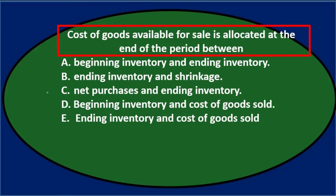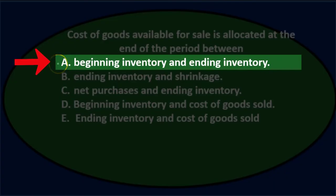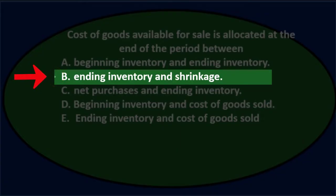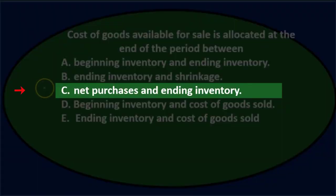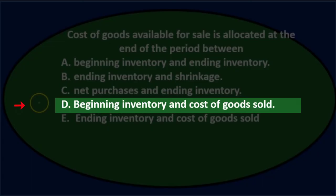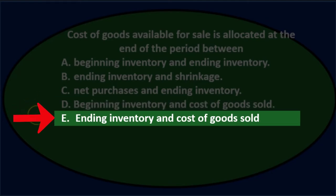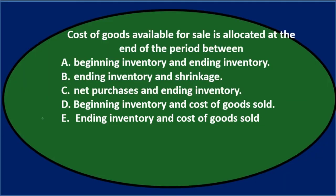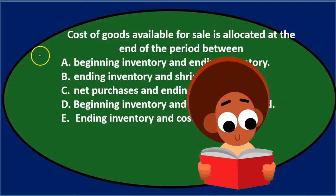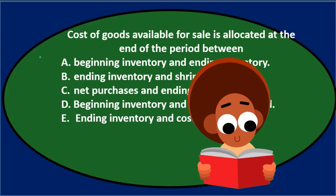Cost of goods available for sale is allocated at the end of the period between: A — beginning inventory and ending inventory; B — ending inventory and shrinkage; C — net purchases and ending inventory; D — beginning inventory and cost of goods sold; E — ending inventory and cost of goods sold. We'll go through these and see if we can eliminate some answers.